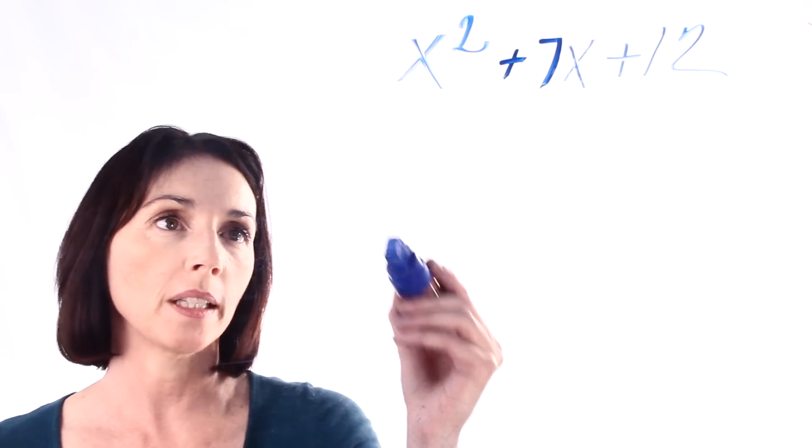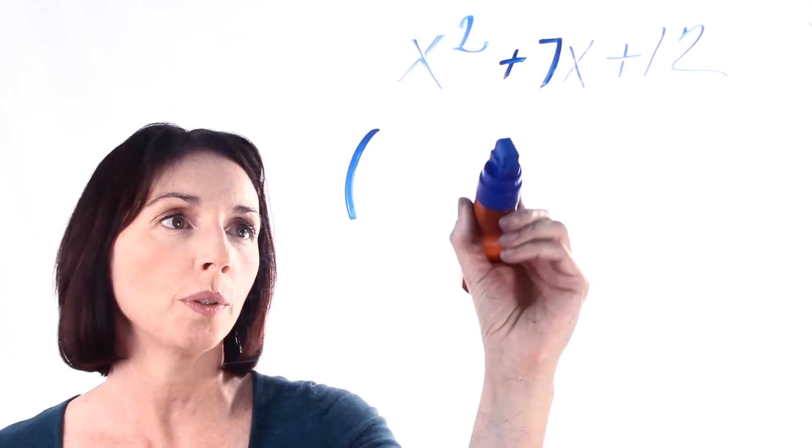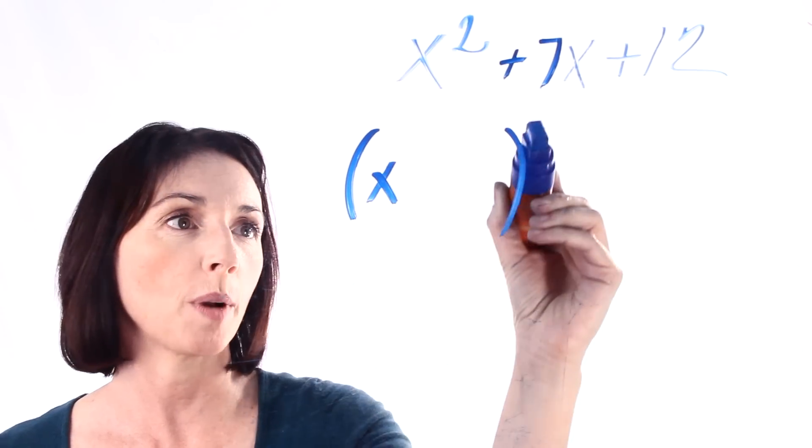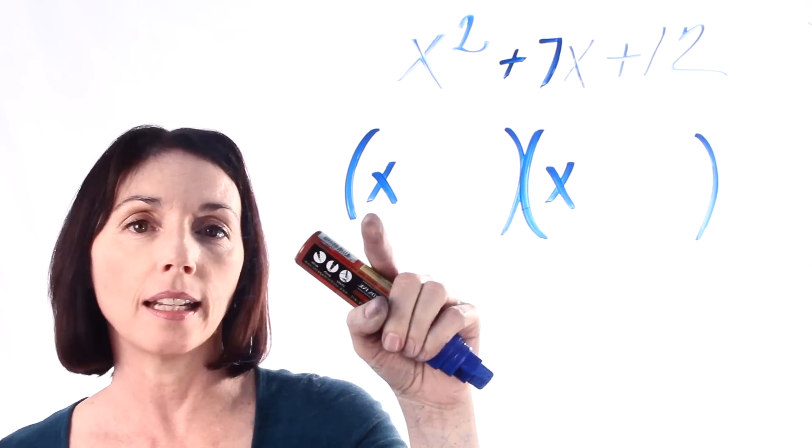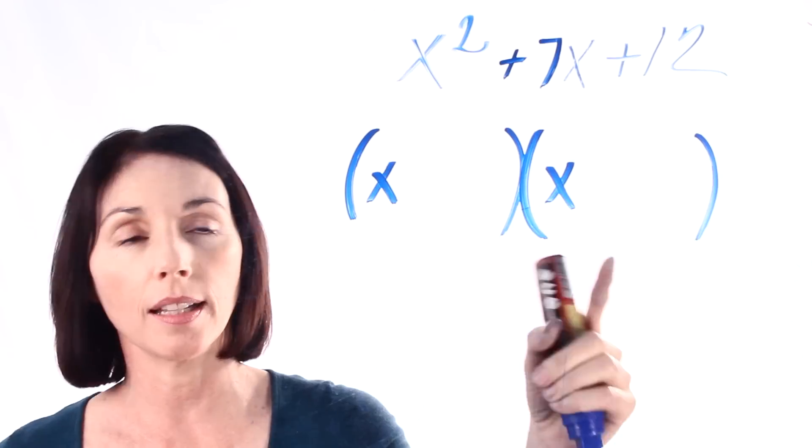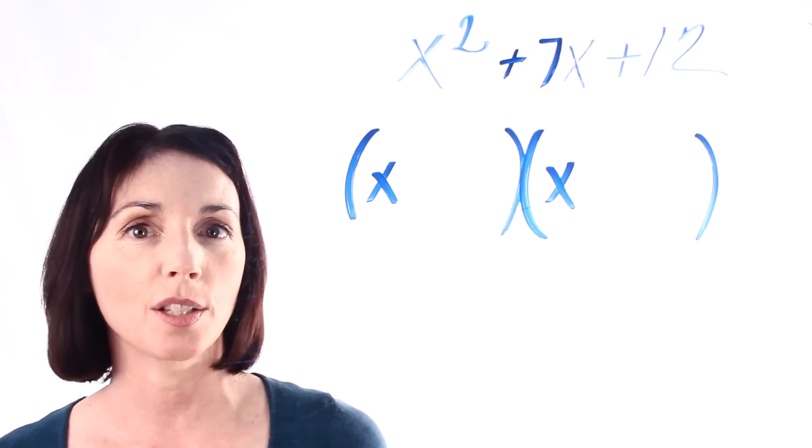Whenever you factor something like this you're going to end up with two parts of the expression. And you're going to get an x in one and an x in the other because later on when you multiply it out that's how you get your x squared.